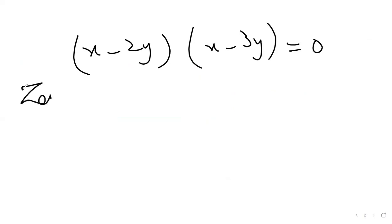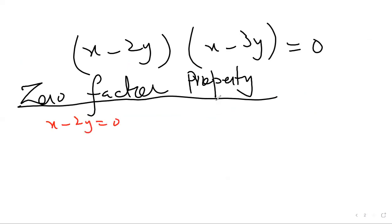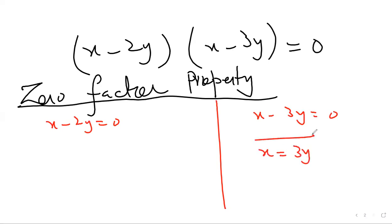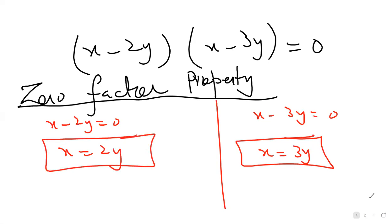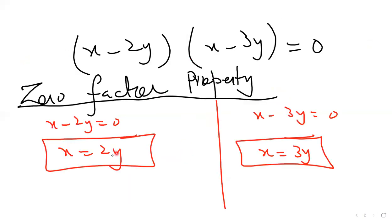Here we apply the zero factor property: if a product of multiple terms equals zero, we can set each factor equal to zero individually. So x − 2y = 0 gives x = 2y, and x − 3y = 0 gives x = 3y. We get two linear equations from the quadratic. When a quadratic equation also has an xy term, we apply middle term breaking to obtain two linear equations.